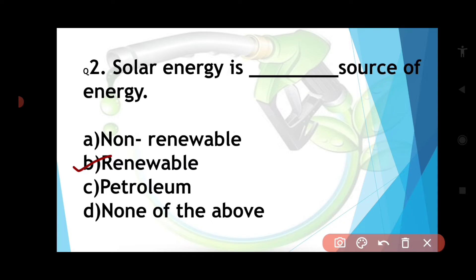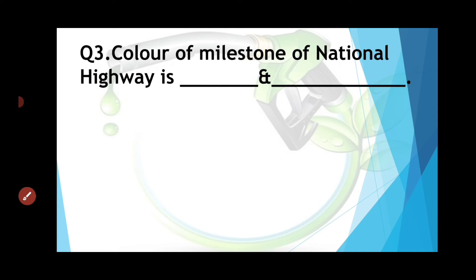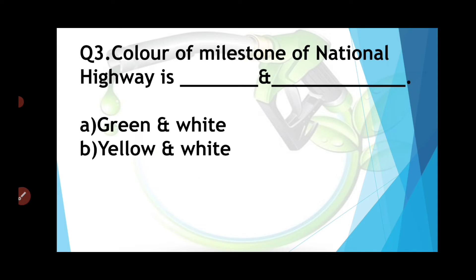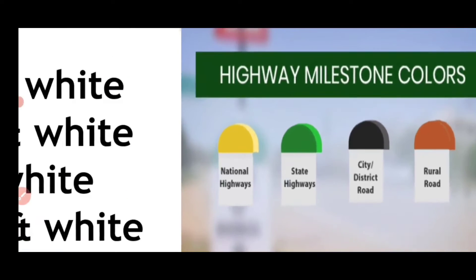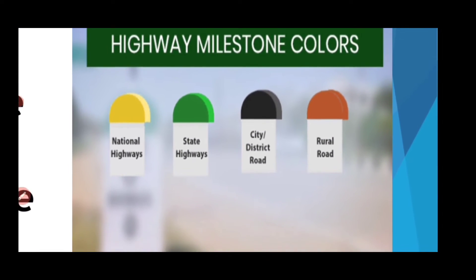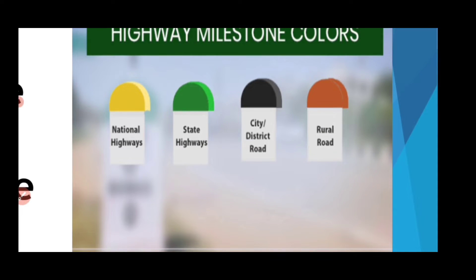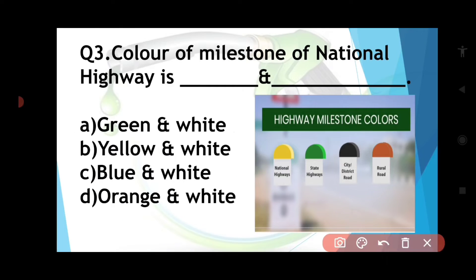Question number three: The color of milestones on national highways is — options are green and white, yellow and white, blue and white, or orange and white. There are four types of milestones: for national highways it is yellow and white, for state highways it is green and white, for city and district roads it is blue and white, and for rural areas it is orange and white. The question asks about national highways, so the answer is yellow and white.